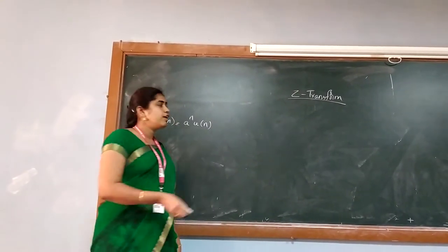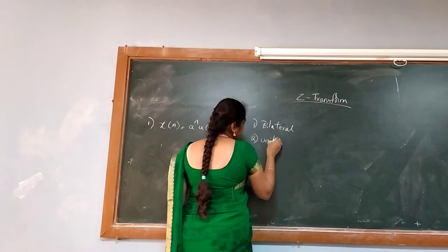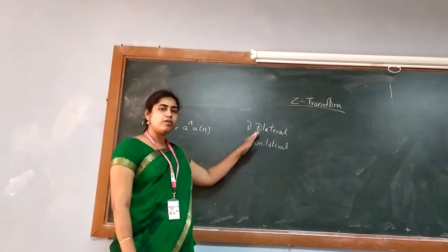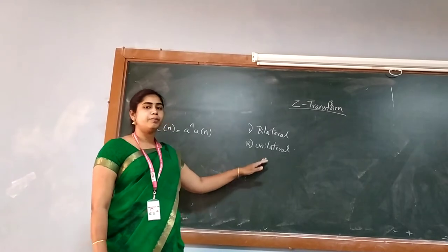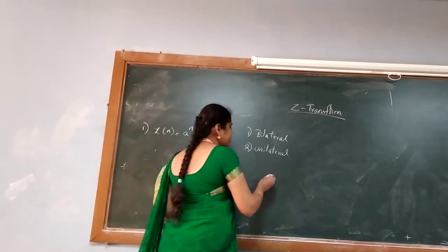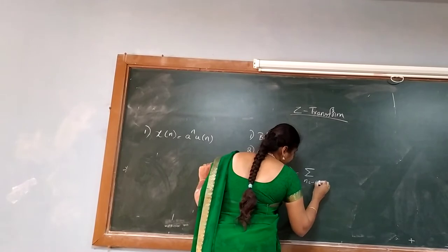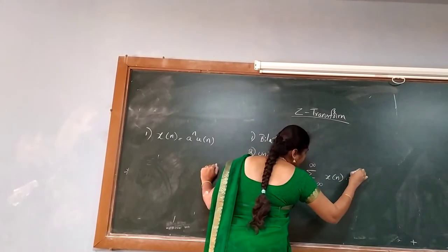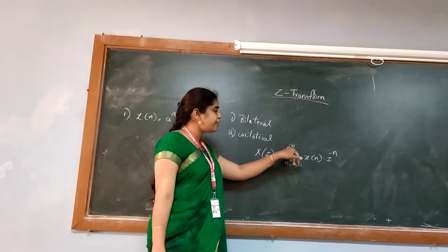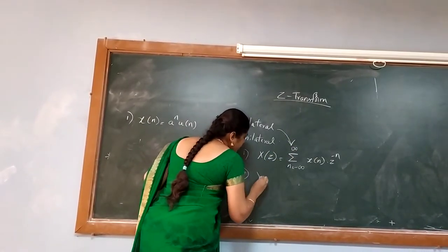Z-Transform has two types: one is bilateral and unilateral. Bilateral is also called as two-sided Z-Transform, and unilateral Z-Transform includes only one side. The bilateral Z-Transform equation is represented as: sigma, n equals minus infinity to infinity, of x(n) into z to the power minus n. Here the limits are from minus infinity to plus infinity, which indicates this is the bilateral Z-Transform.